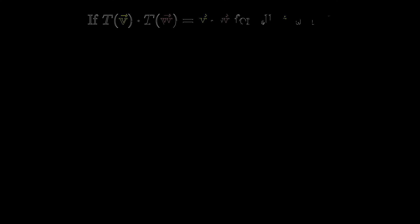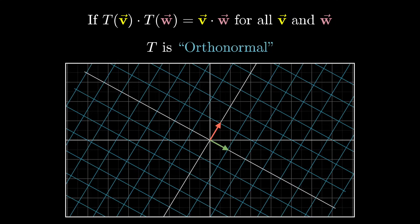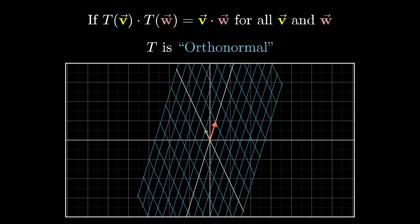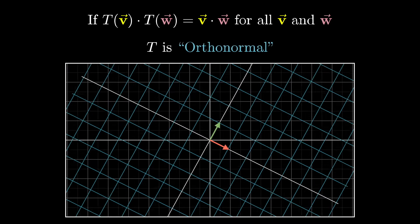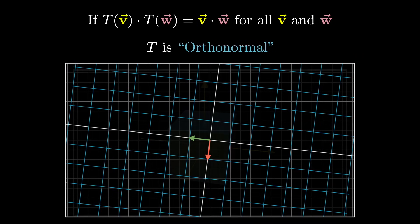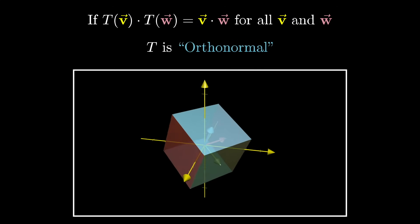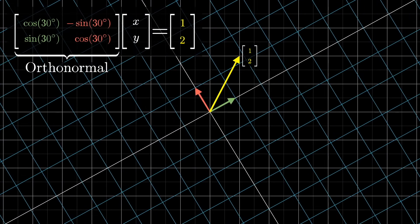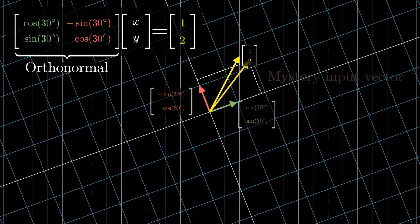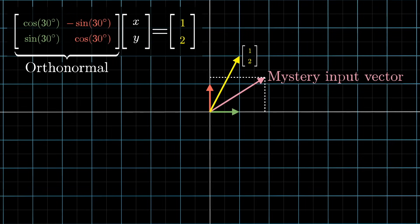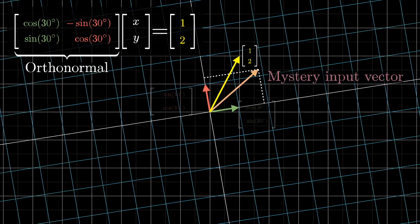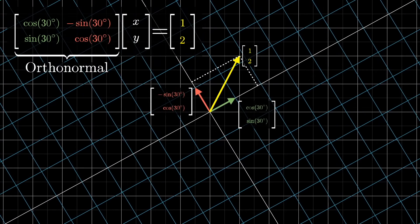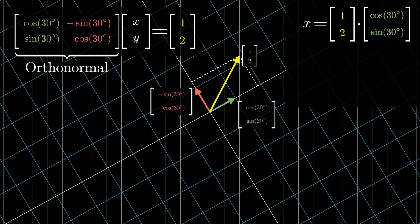Worthwhile side note: transformations which do preserve dot products are special enough to have their own name — orthonormal transformations. These are the ones that leave all of the basis vectors perpendicular to each other and still with unit lengths. You often think of these as the rotation matrices; they correspond to rigid motion with no stretching, squishing, or morphing. Solving a linear system with an orthonormal matrix is actually super easy. Because dot products are preserved, taking the dot product between the output vector and all the columns of your matrix will be the same as finding the coordinates of the mystery input. So in that very special case, x would be the dot product of the first column with the output vector, and y would be the dot product of the second column with the output vector.